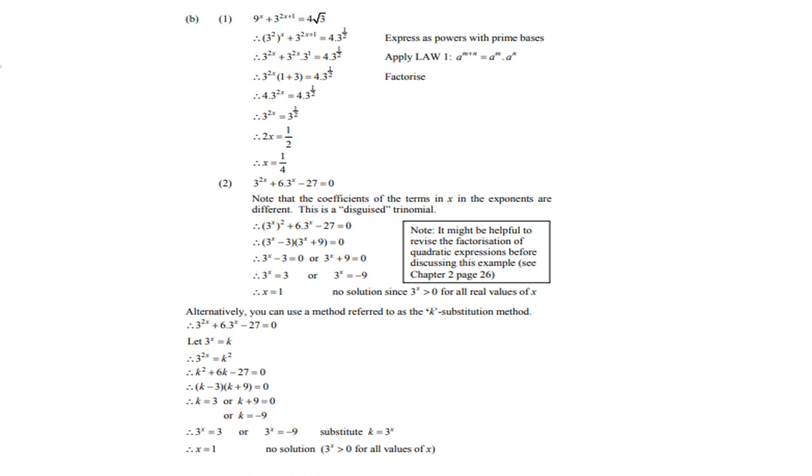In the next one if you take the 9 over it becomes negative 9, and we know that is not allowed because 3 to the power x is something which is greater than zero. It's never negative. So you must remember that. Look at the alternate method where you use the k method.